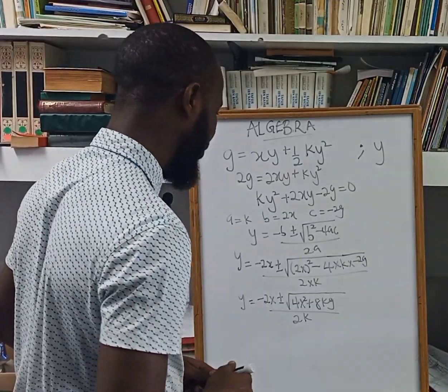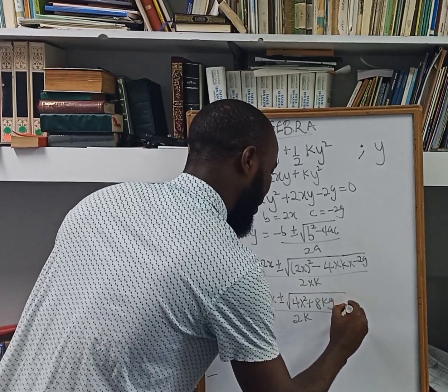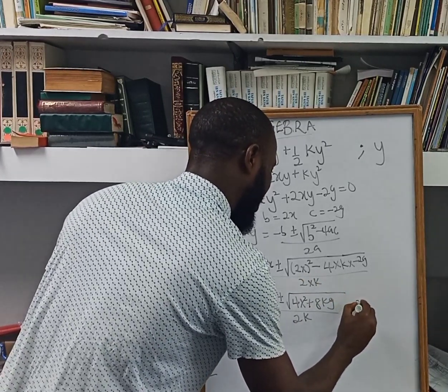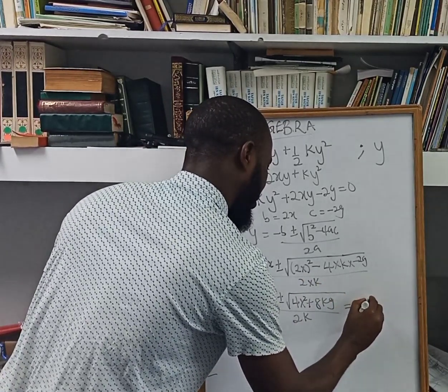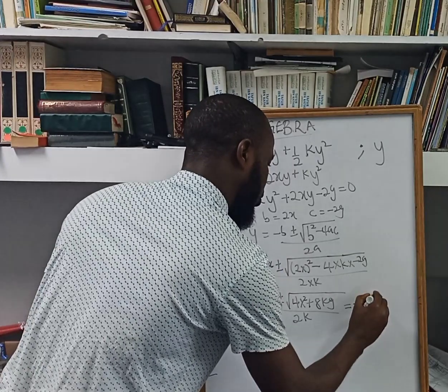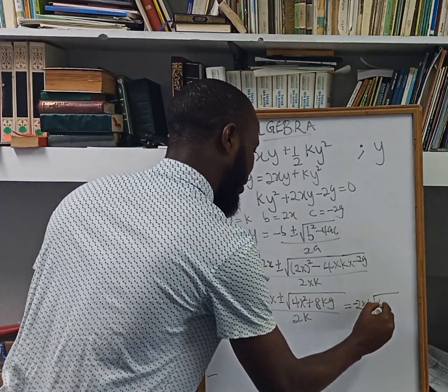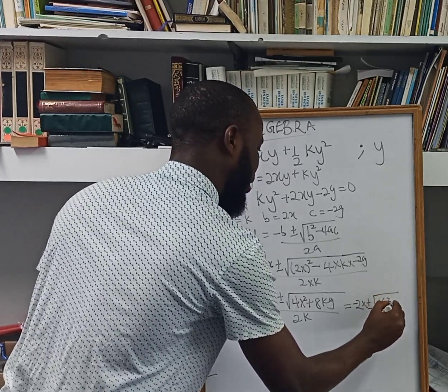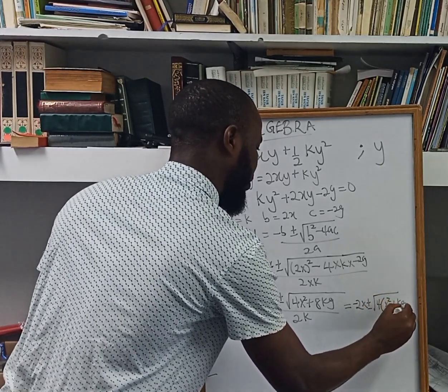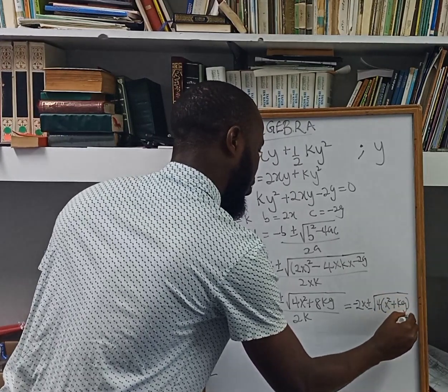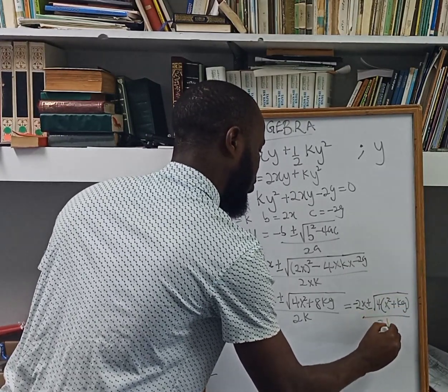So simplifying this, here I can have this to be negative 2x plus or minus root. Factorizing 4 out here, I will be left with x squared plus 2kg, all over 2k.